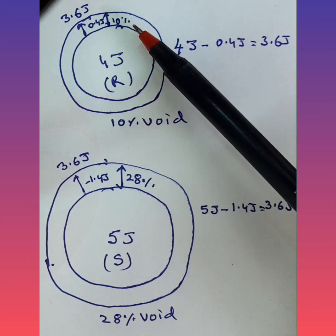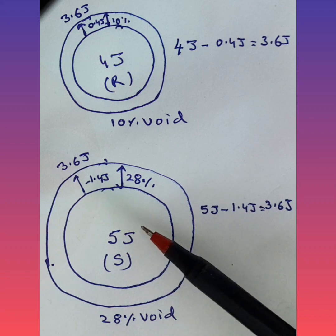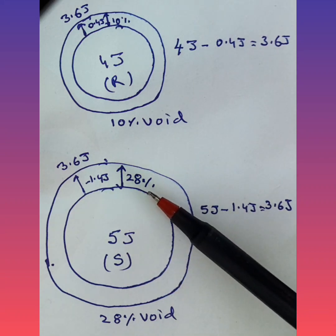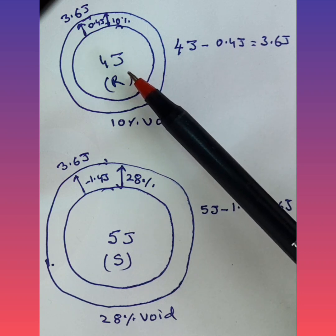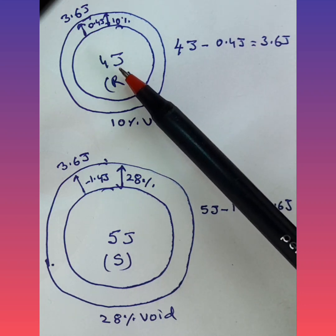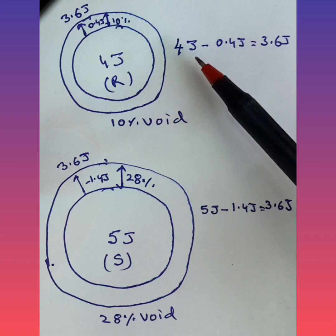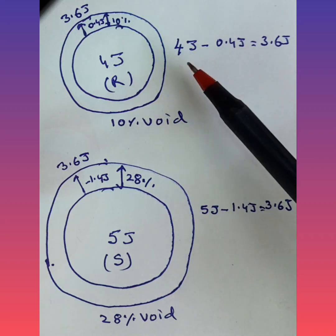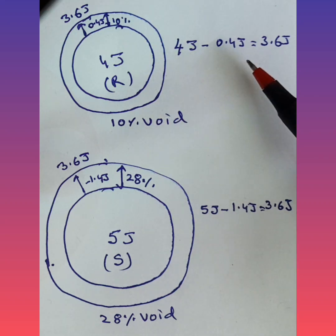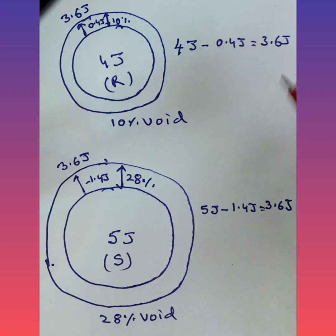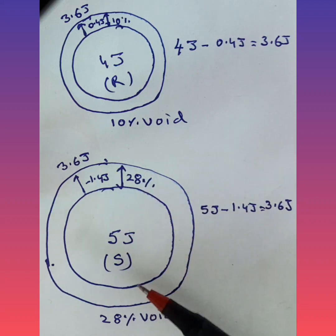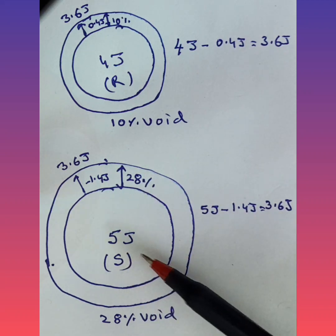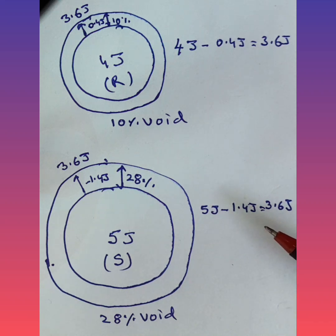The R enantiomer fits in but leaves a void of 10 percent. The S enantiomer fits in and leaves a void of 28 percent. In my calculation, I subtracted 10 percent of 4 joules, which comes to 0.4 joules, so 4 joules minus 0.4 joule gives 3.6 joules.